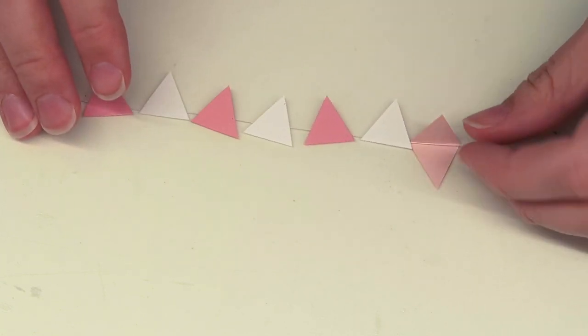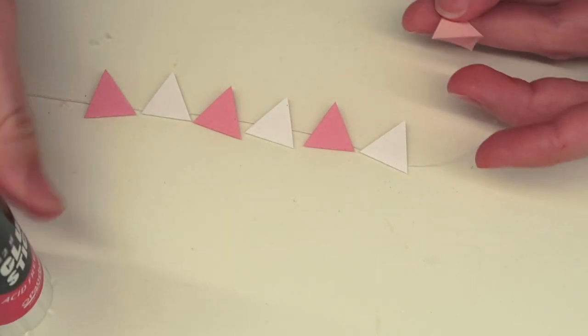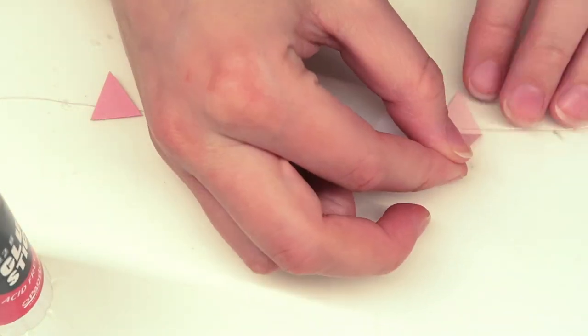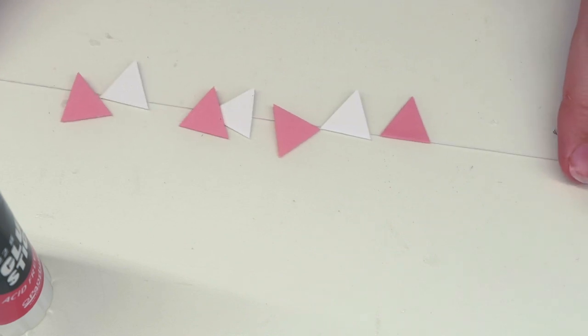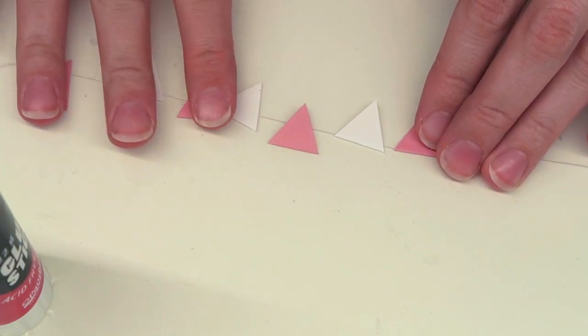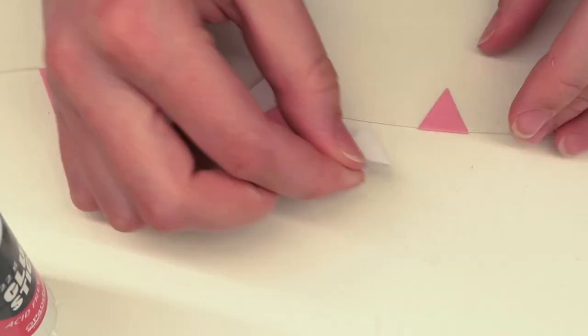The easiest way to put this together is to take the paper that you want to use and fold that in half, and then cut a triangle on that fold. That way both sides will be equally big, and then just glue it onto some sewing thread. I decided to go with just plain white and pink flags and make it very minimal.